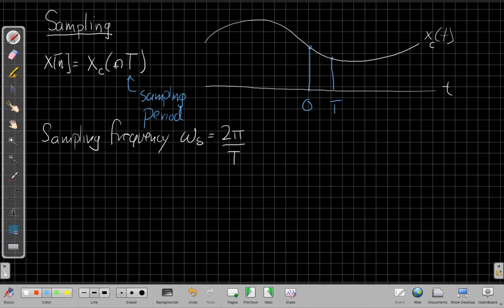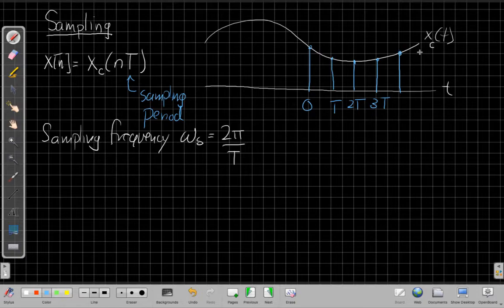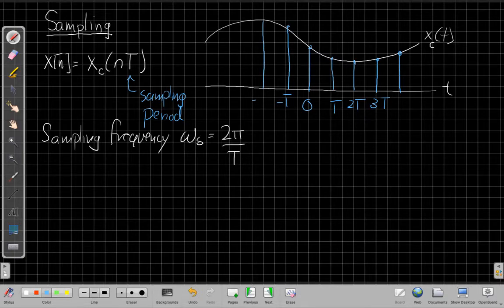And so what this equation says to do is to move along every multiple of capital T, and at that point, we're going to grab the amplitude of the continuous time signal and use that for our samples. This is an idealized mathematical representation. In real life, this would be approximated by some implementation like an analog-to-digital converter, or A-to-D converter sometimes, as they're abbreviatedly called.